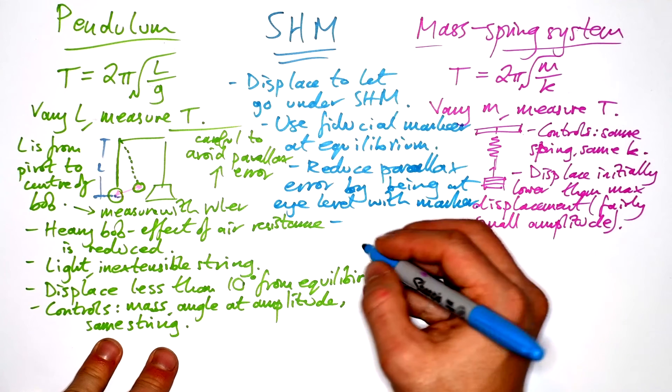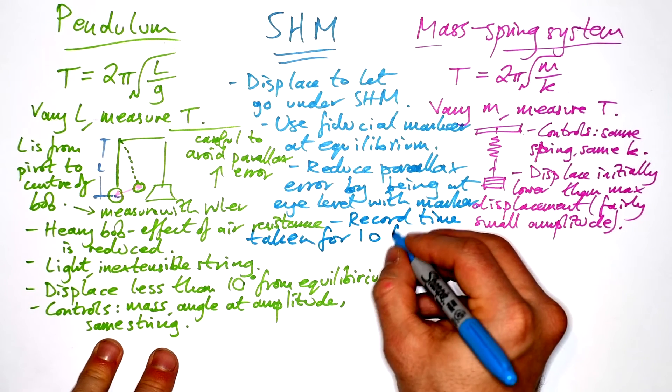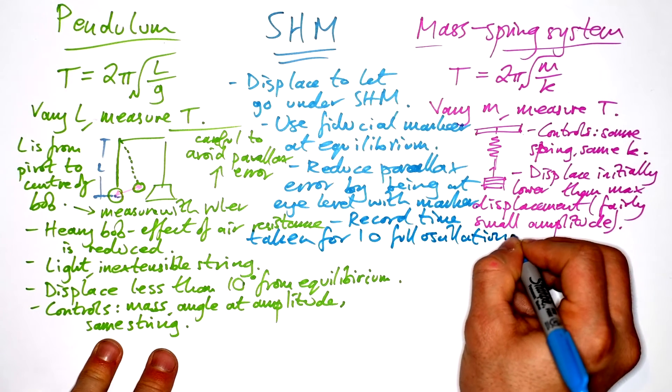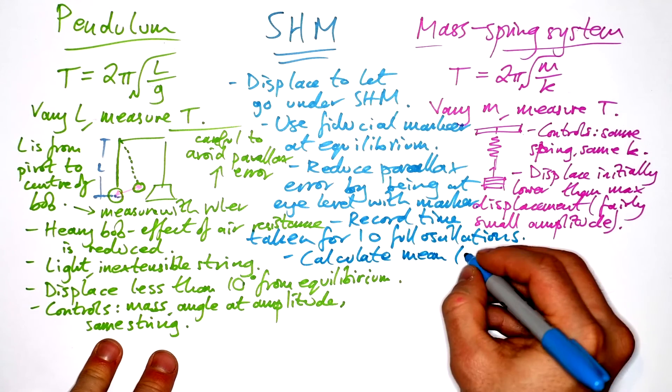As usual, when we're timing any periodic motion, we want to record time taken for 10 full oscillations. That's there to the other side and back again. And then we want to calculate the mean. Obviously, this is more precise.